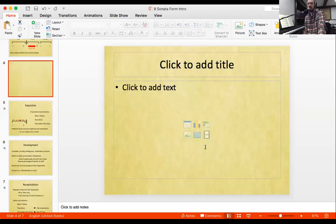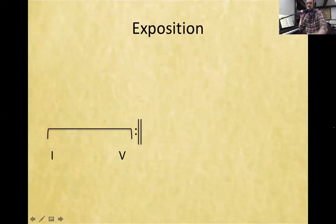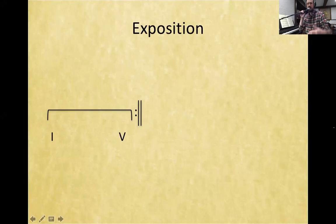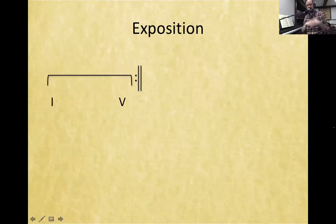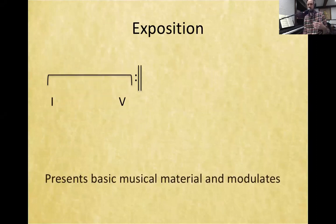Now that we have a feel for the general overview of Sonata Form, and we know about the three sections — the exposition, the development, and the recap — let's get a little bit more into depth and look at what really goes on in these subsections.